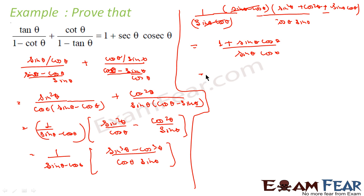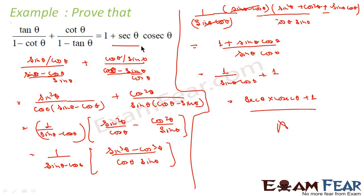This gives (1 - sin θ·cos θ)/(sin θ·cos θ) = 1/(sin θ·cos θ) - 1 ... actually this becomes 1/(sin θ·cos θ) + 1, which is sec θ·cosec θ + 1, or 1 + sec θ·cosec θ. That is the RHS.